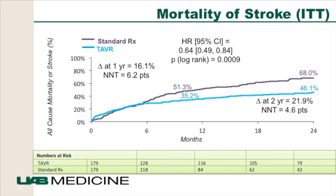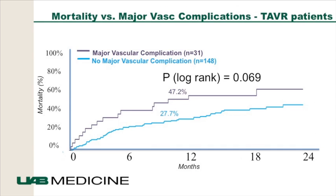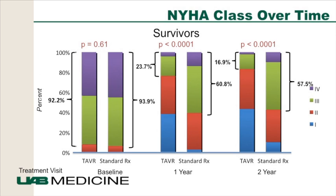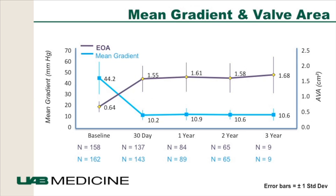Looking at mortality or stroke, there was significant benefit with TAVR compared to medical therapy. There was a slightly higher chance of vascular complication with TAVR given its invasiveness compared to medical therapy; nevertheless, the mortality benefits outweighed the vascular complications. Apart from mortality, there was increased benefit in NYHA class — patients came in with class 3 to 4 symptoms, and after one to two years, the majority were class 1 to 2, showing definite improvement in quality of life in those that survived.